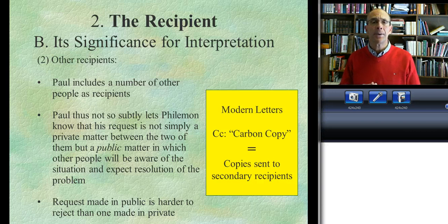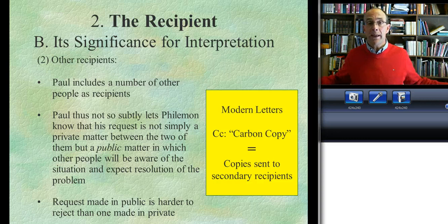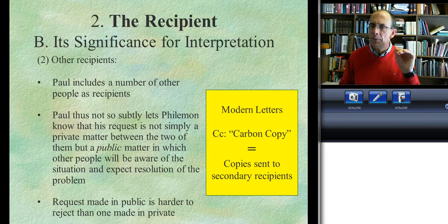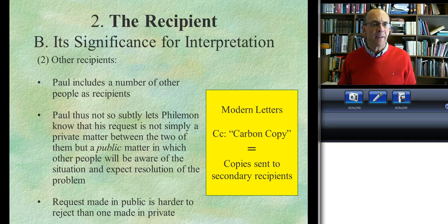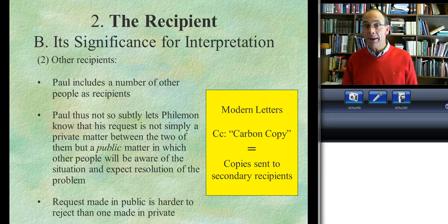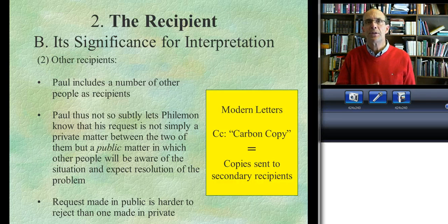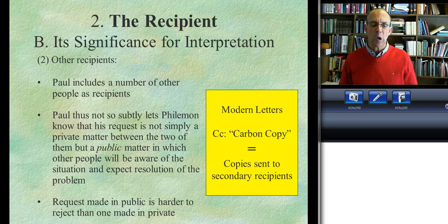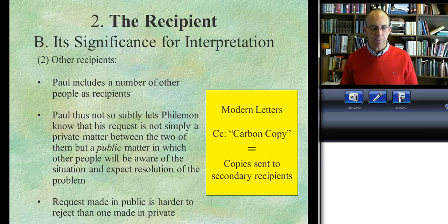Paul has deliberately made this personal request to Philemon a more public matter. He mentions Apphia, likely his wife; Archippus, likely the interim pastor of the Colossian church that meets in Philemon's home; and then the whole church that meets in your house. Everybody will know about the situation, the eyes are on Philemon, and he feels that pressure. Paul does the same thing in the letter closing — not only does everybody on Philemon's end know, but everybody with Paul knows too. Paul mentions first, at the end of the letter, Epaphras — Philemon's pastor — in the number one position, with the title 'prisoner,' the same title Paul used at the opening of the letter.